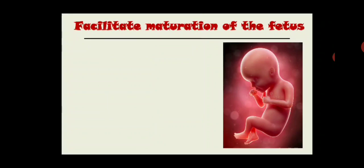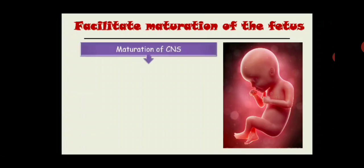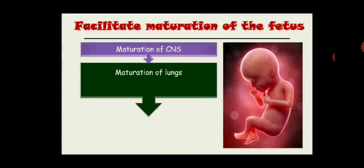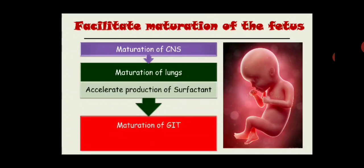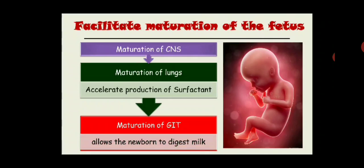Cortisol facilitates maturation of the fetus. It matures the CNS and the lung — by increasing production of surfactant. If there are chances of premature birth, the gynecologist gives injections of hydrocortisone to the mother — two injections of 25 mg, 24 hours apart. It also matures the GIT, allowing the fetus or newborn to digest milk. This concludes the action of glucocorticoid on metabolism; the next lecture will discuss further effects.